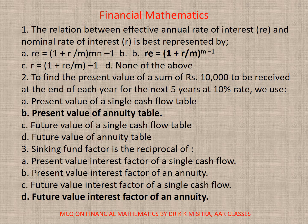Question number 1: The relation between effective annual rate of interest Re and nominal rate of interest R is best represented by — the correct option is B: Re is equal to (1 + R/M) to the power M minus 1.